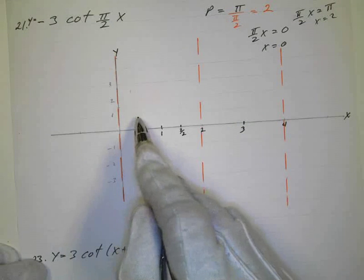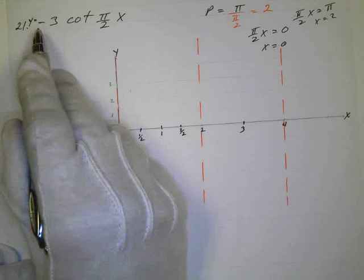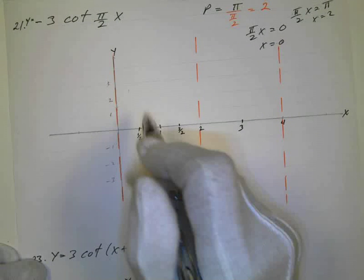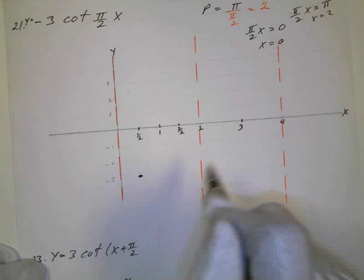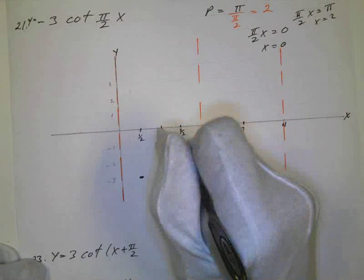1 half times pi over 2 is pi over 4. The cotangent of pi over 4 is 1. That's normally here, but I don't have 1. I've got to multiply that by negative 3, so that's going to drop this 1 down to a negative 3, so right there. So it's going to start to look like the tangent form, sort of.